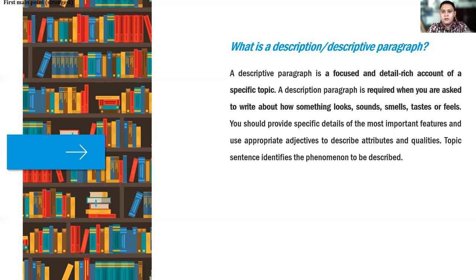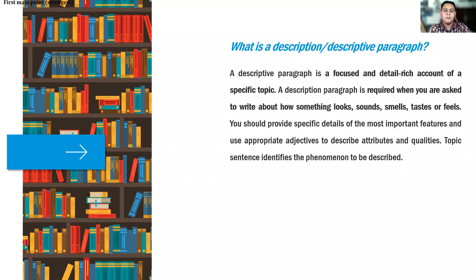You should provide specific details of the most important features and use appropriate adjectives to describe attributes and qualities — whether describing a person, animal, or object. The topic sentence identifies the phenomenon to be described. In a descriptive paragraph, at the start of the paragraph, we need to create a short sentence that works like a summary of what we want to transmit with the message.